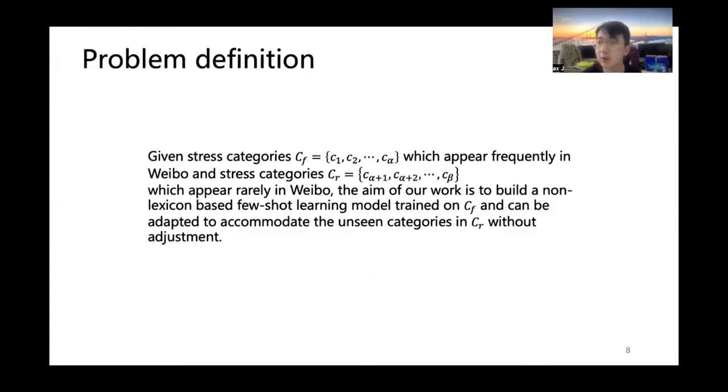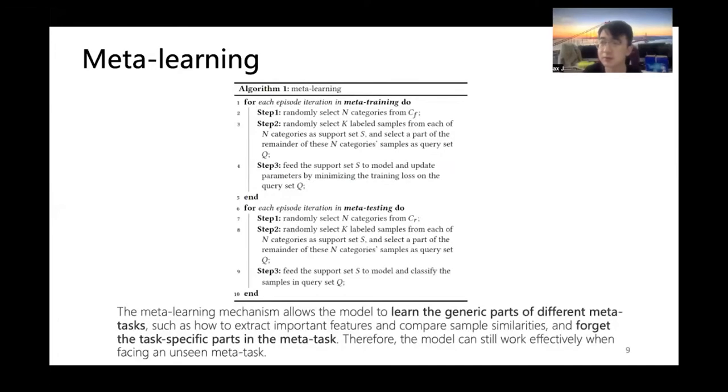In this paper, we define a few-shot stress category classification problem that needs a model to recognize unfrequently appeared stress categories, and can be directly adapted to rarely appeared stress categories with a few samples. To address the challenges of both methods, we employ meta-learning mechanisms. The meta-learning mechanisms allow the model to learn the generic parts of different meta tasks, such as how to extract important features and compare sample similarities, and forget the task-specific parts in the meta task. Therefore, the model can still work effectively when facing an unseen meta task.